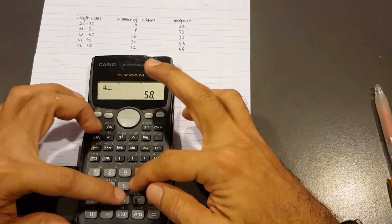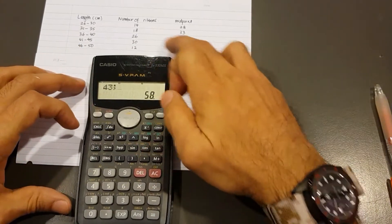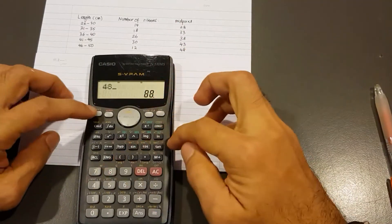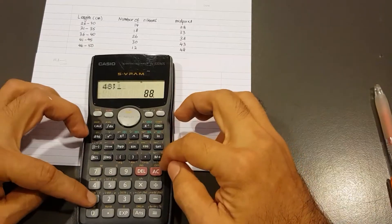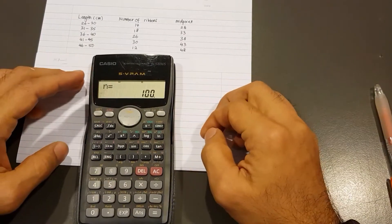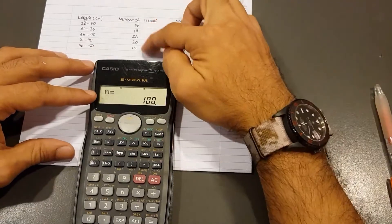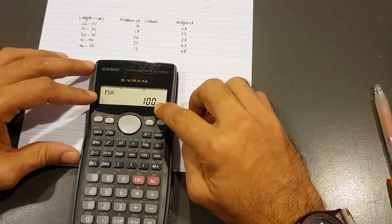Next one, 43, shift, comma, frequency is 30, M plus. And finally, it's 48, shift, comma, frequency is 12, and then M plus. So here we get N equal to 100. That's because the total frequency here is equal to 100.